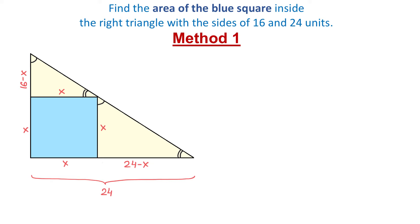For example, let's use the small triangle with the left side of 16 minus x and the bottom side x, and the large triangle with the left side of 16 and the bottom side of 24. In the proportion, we can write that the left side of the small triangle, which is 16 minus x, divided by the left side of the large triangle, which is 16, is the same as the bottom side of the small triangle, which is x, divided by the bottom side of the large triangle, which is 24.